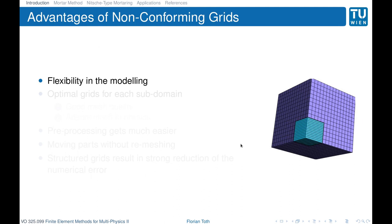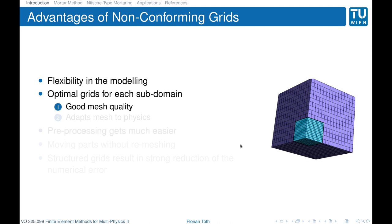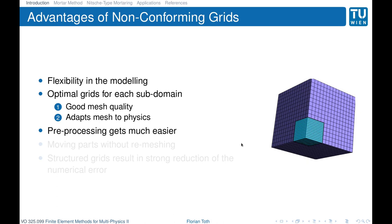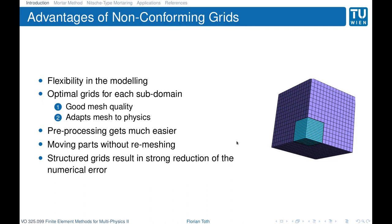This gives us a few advantages compared to the standard finite element method. The first is flexibility in the modeling. The second is we can use optimal grids for each subdomain, giving us good mesh quality and the ability to adapt the mesh to the physics. The pre-processing gets much easier, and another advantage is we can tackle moving parts without remeshing because we don't need a conforming grid at the rotating interface and can simply transfer the relevant quantities. Also, structured grids result in a strong reduction of numerical error, and with non-conforming grids, generating structured grids is possible for many geometries.